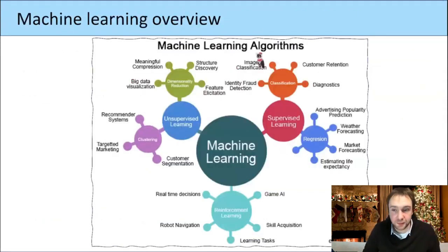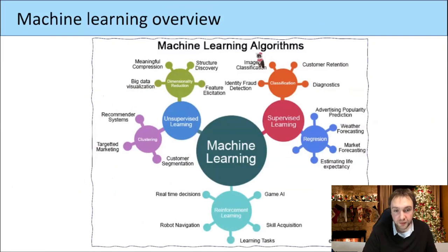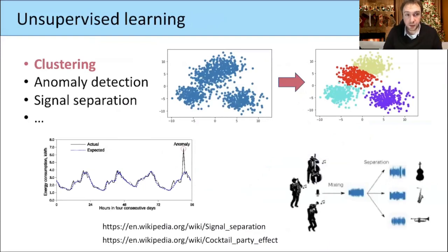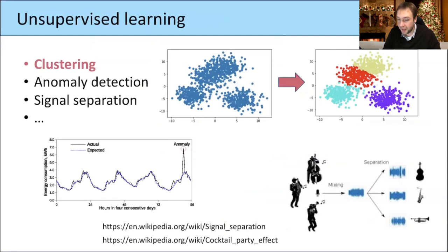Let's go now to the second part of the lecture: unsupervised learning and clustering. What is unsupervised learning? It's like supervised learning but without a supervisor. We just get some data and our program or machine should try to see some structure in this data. This can be used in many different applications.